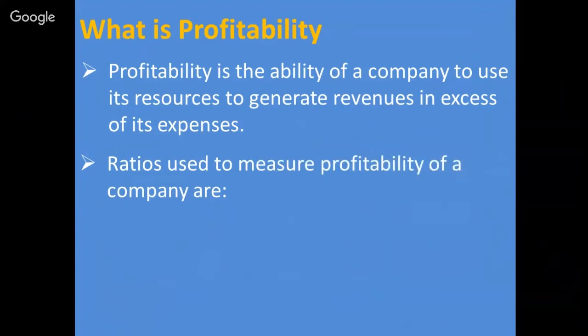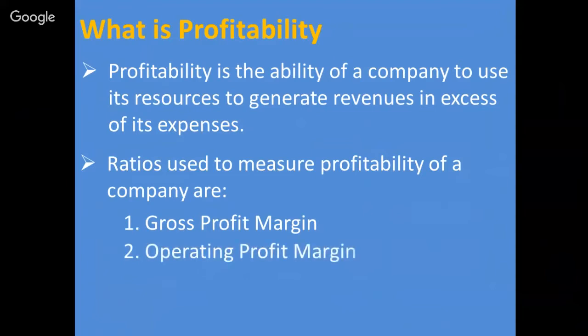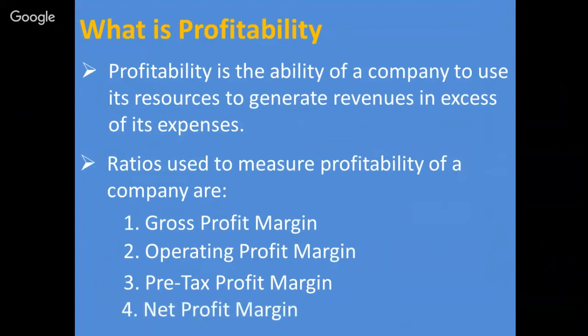جو ratios ہم use کریں گے to measure profitability of a company وہ چار ہیں: number ایک ہے gross profit margin، number دو ہے operating profit margin، تیسرا ہے pre-tax profit margin، اور آخر میں net profit margin۔